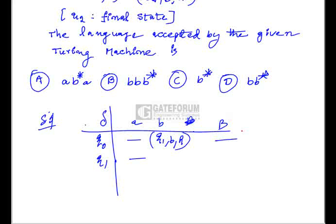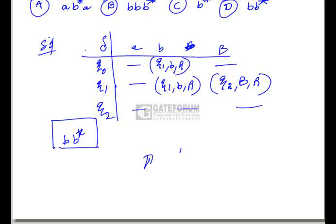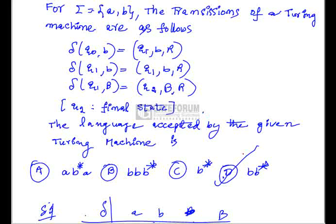On Q1 with B, it stays at Q1 moving right, so any number of B's can be accepted. When Q1 encounters a blank, it goes to Q2, which is the final state. So the machine accepts at least one B followed by any number of B's, that is BB*. If A appears, for example 'AB', Q0 on A will halt without reaching a final state, so AB is not accepted. Only strings of the form BB* are accepted — option D is correct.